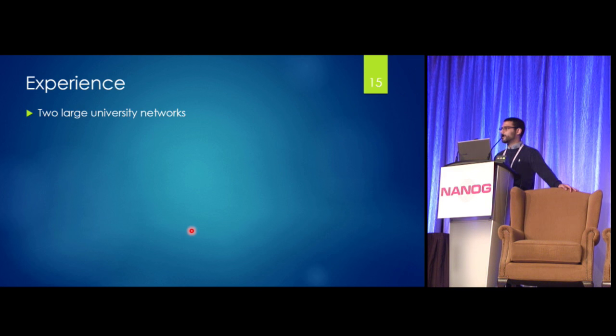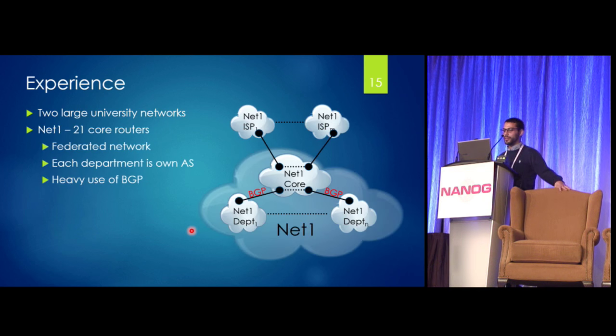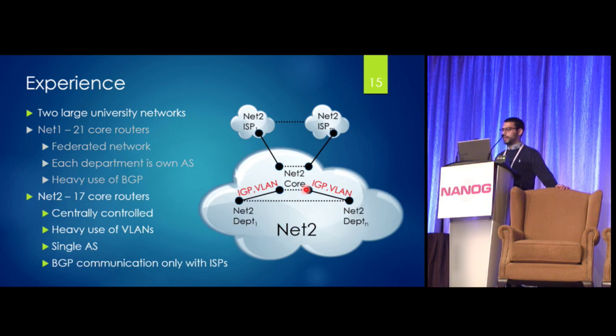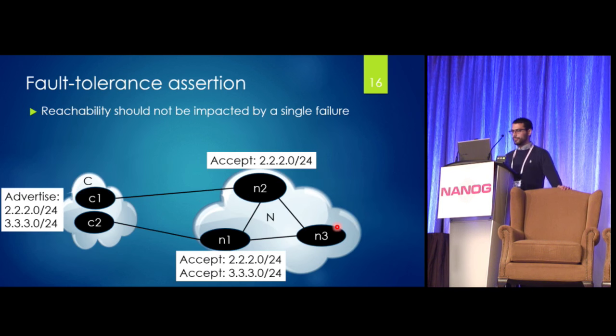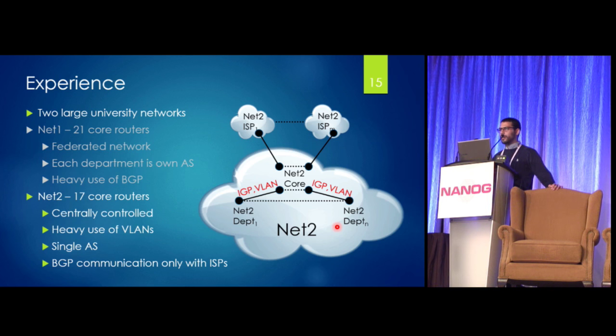So we actually tested out Batfish on two large university networks as well as Microsoft's network. Unfortunately I won't be able to tell you anything about the results at Microsoft, but I can explain what happened at these university networks. So they're qualitatively different, these two. The first one has a decentralized design at the core. This is managed by the network operations center team, and then they have a different team for each department, which is configured as a different autonomous system, and the core peers with all of these departments using BGP. In the other university network we analyzed, it's much more centralized. It's all one autonomous system, and the different departments are partitioned by VLANs.